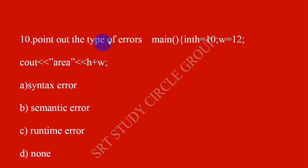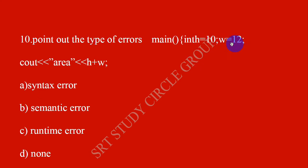Point out the type of error. This is a syntax error. For example: int Archie equal to 10, W equal to 10, semi equal to 10 — this is a syntax error.